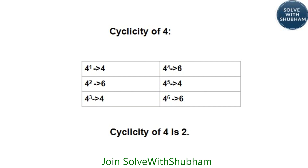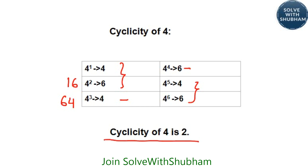Next, cyclicity of 4: 4 to the power 1 ends with 4, 4 to the power 2 is 16 ending with 6, 4 to the power 3 is 64 ending with 6, 4 to the power 4 also ends with 6. So you can see the cyclicity is 2 here, because after 2 iterations the pattern repeats. Cyclicity of 4 is 2.